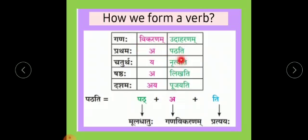If you see the letter before Ti and it is Y in a Zodakshar (half-letter) form, then Y is the Vikaranam of Chaturthaganam. If the letter before Ti is a complete syllable ending with vowel A — that is still A as the Vikaranam sign. And if Y appears before Ti but in complete form (not Zodakshar), then the Vikaranam is AY. So the four Vikaranam signs are: A, Y, A, AY — you just have to learn it like that.